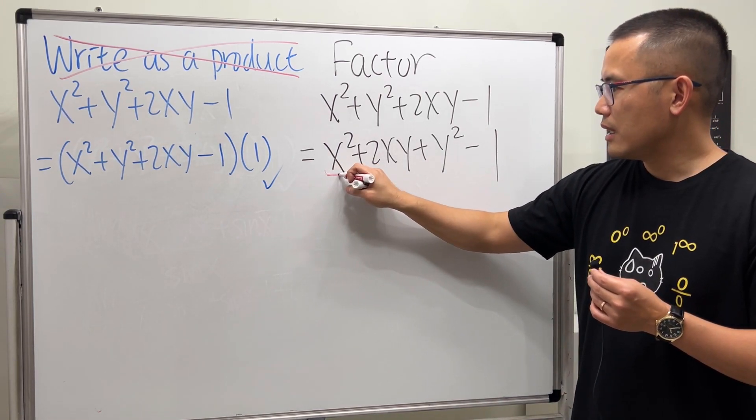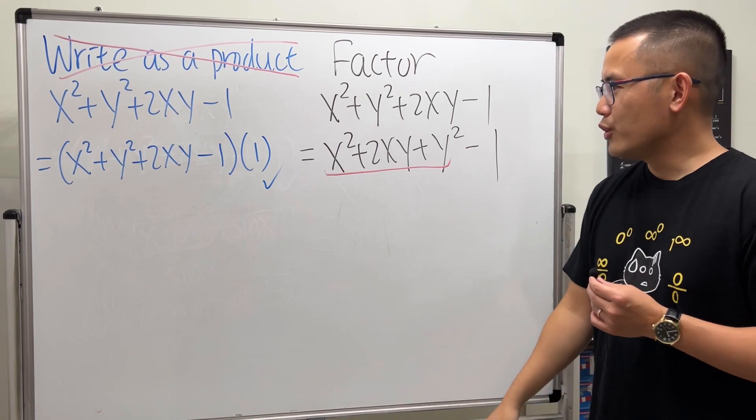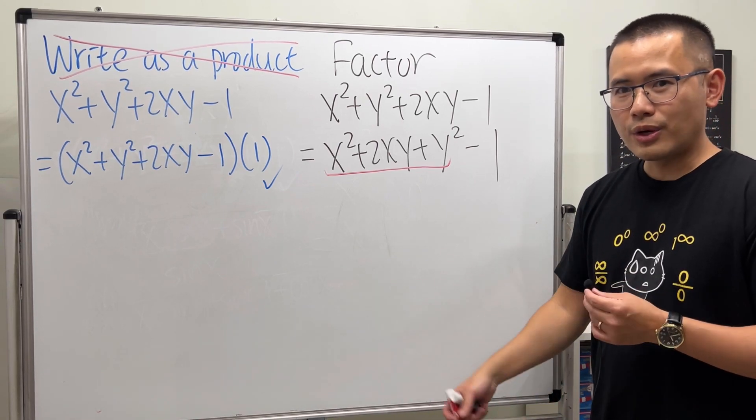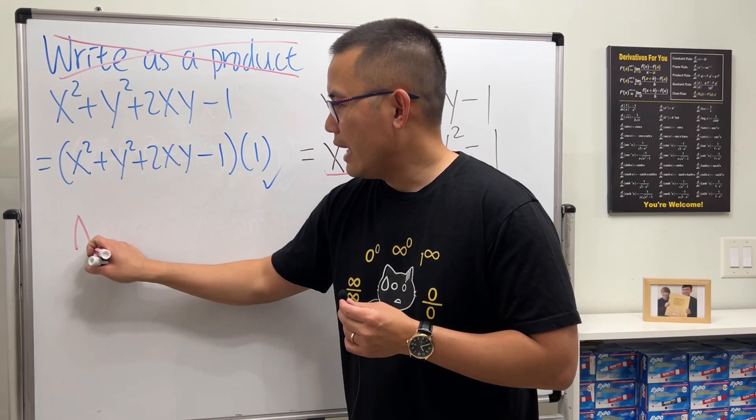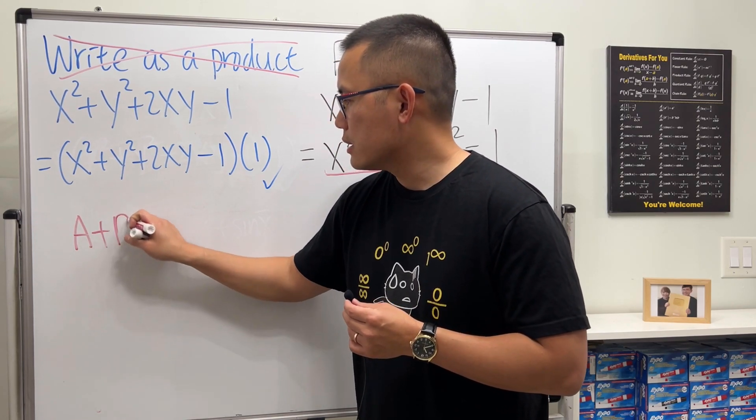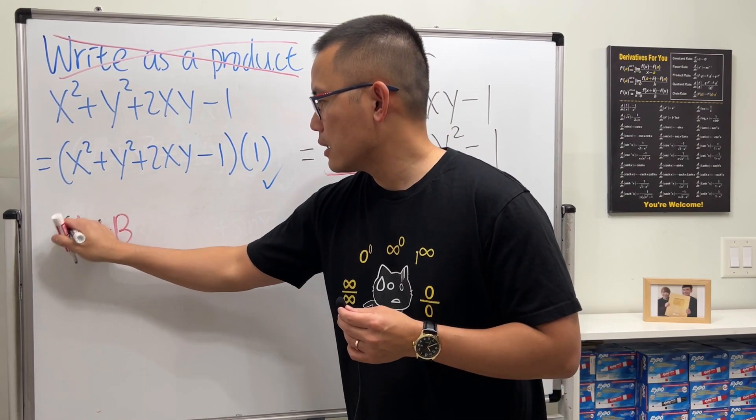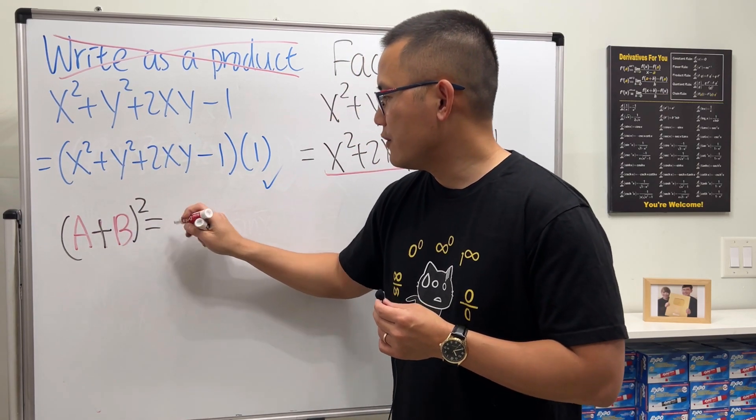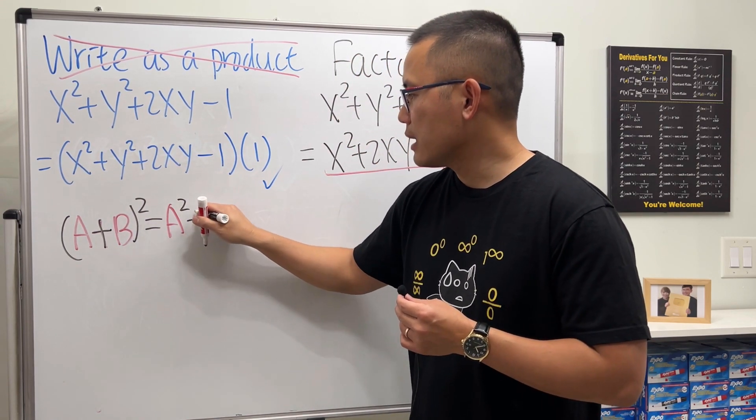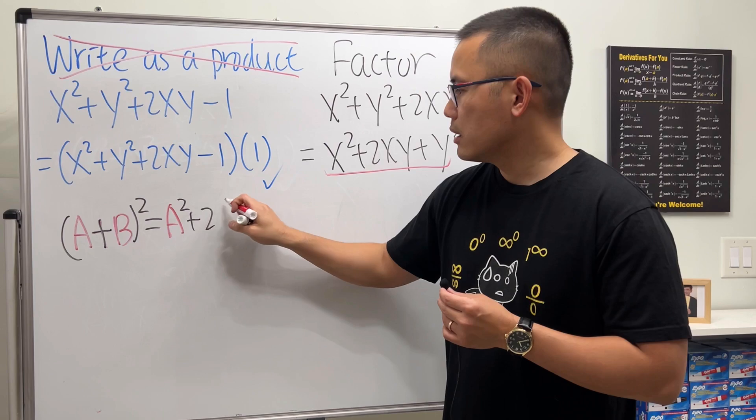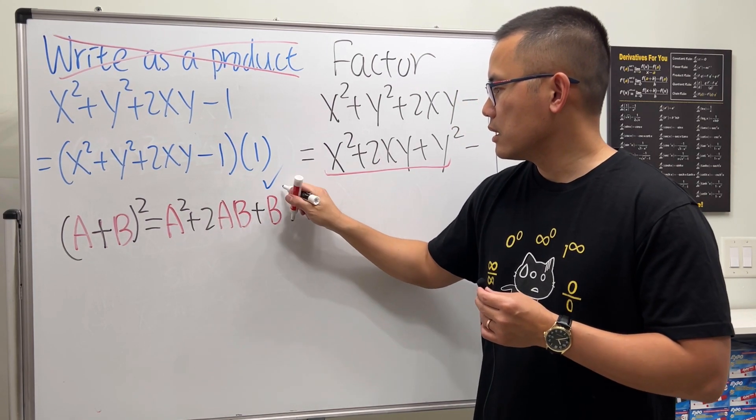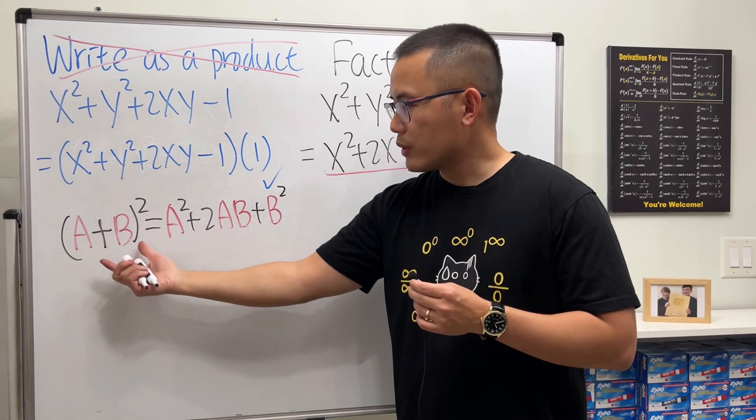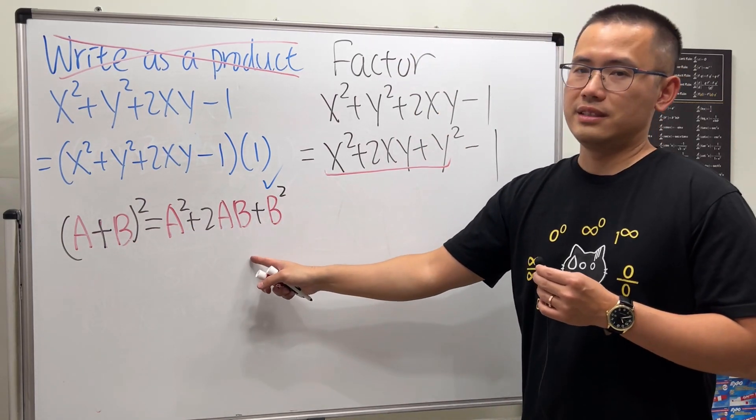Yeah, have a look. This first three terms, what does it remind you of? The trinomial, the binomial theorem. Let me write that down. If we have (a+b)², this right here will give us a²+2ab+b².